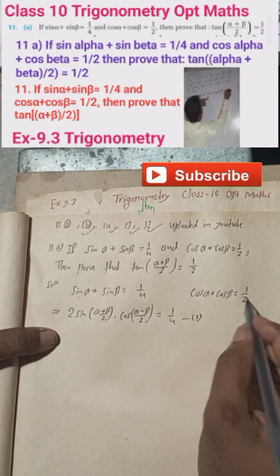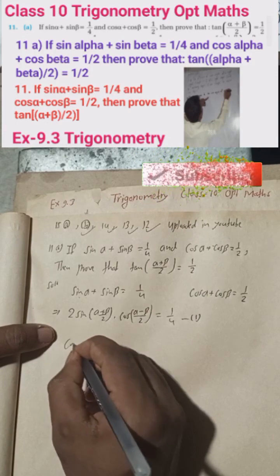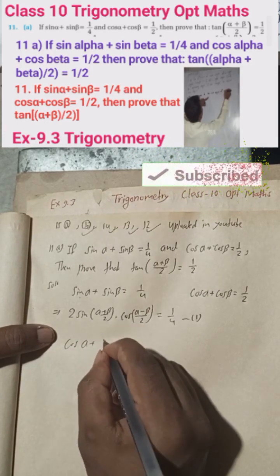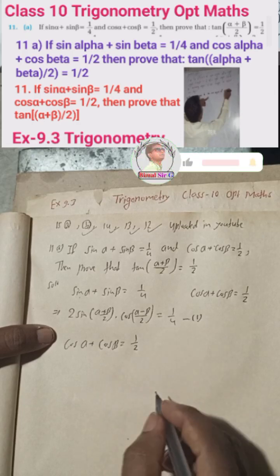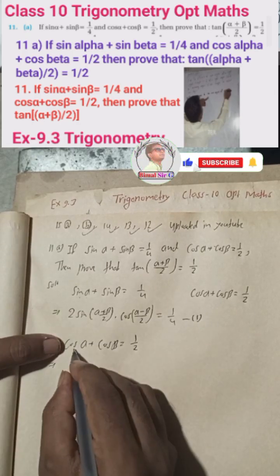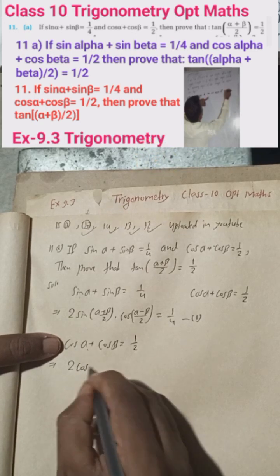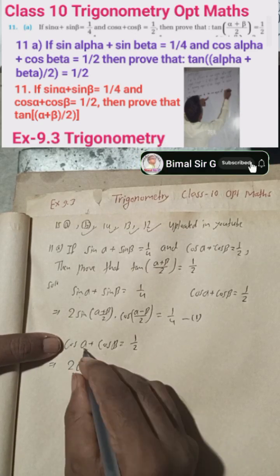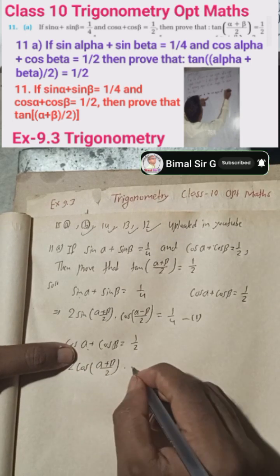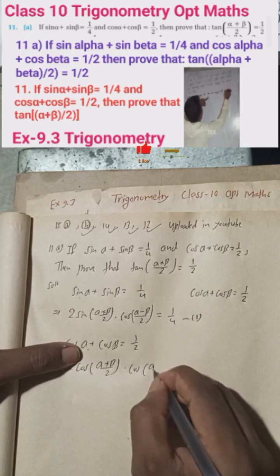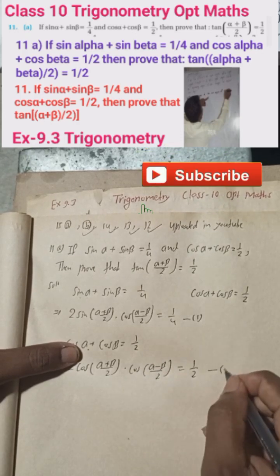Now for the second condition, cos α + cos β = 1/2. We apply the cos C + cos D formula: cos C + cos D = 2 cos((C+D)/2) · cos((C−D)/2). So we get 2 cos((α+β)/2) · cos((α−β)/2) = 1/2. This is equation two.